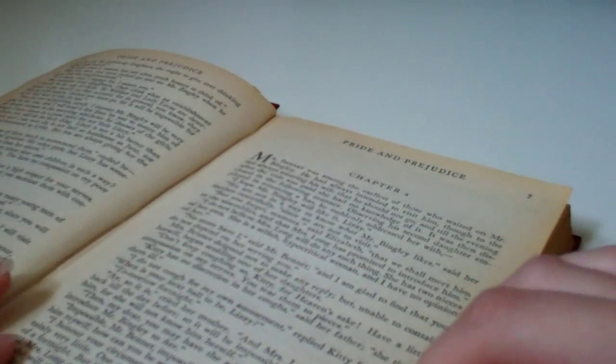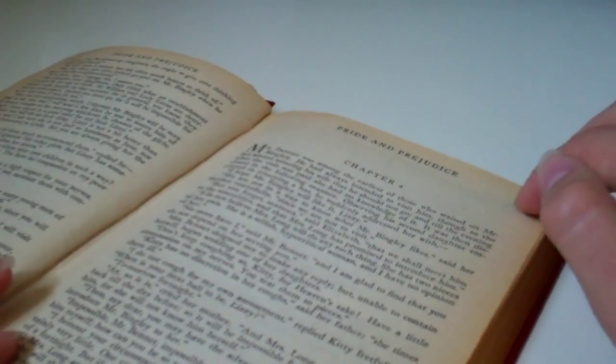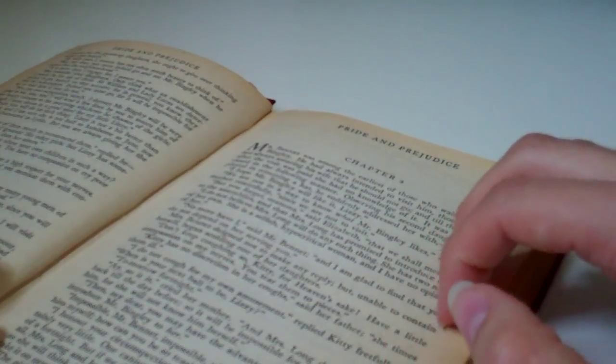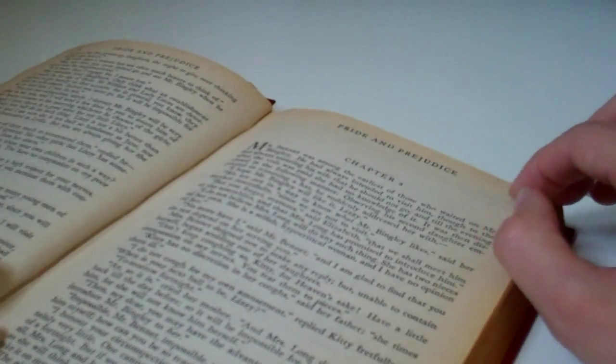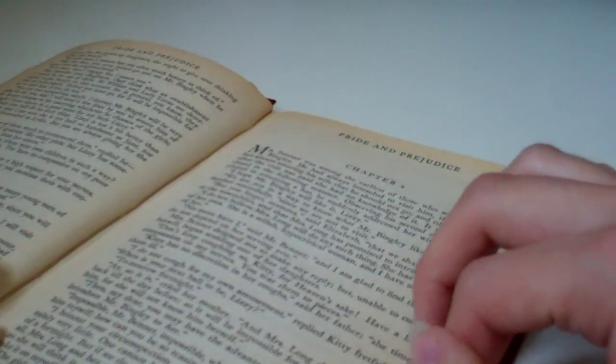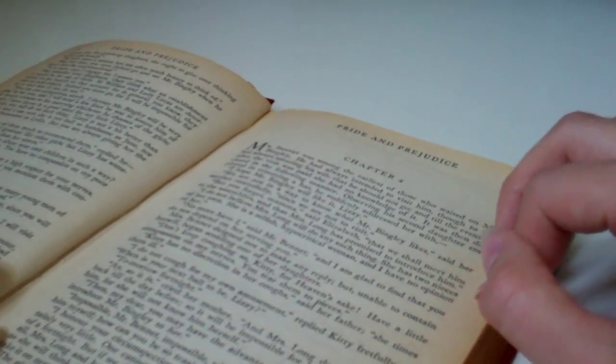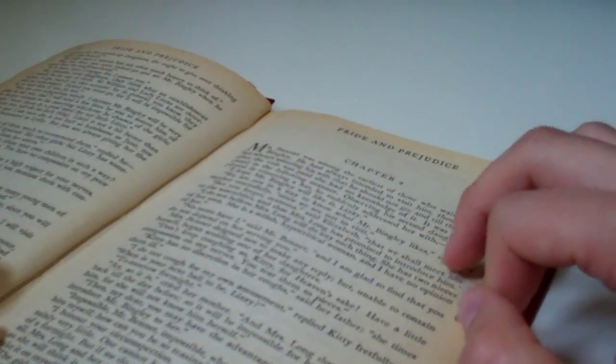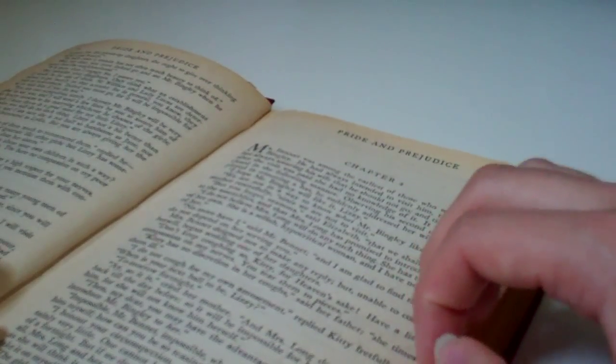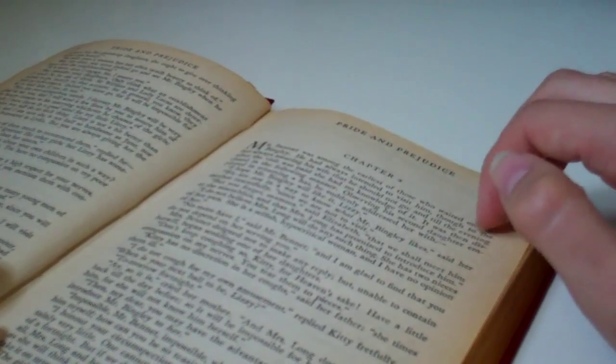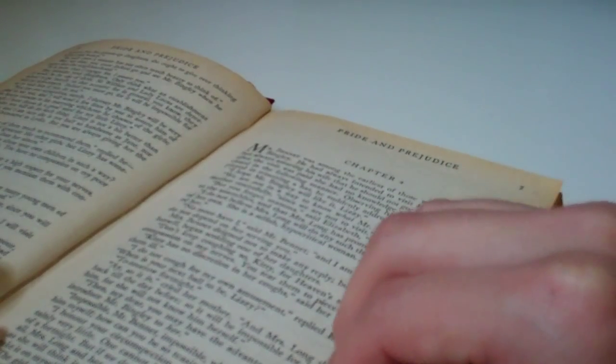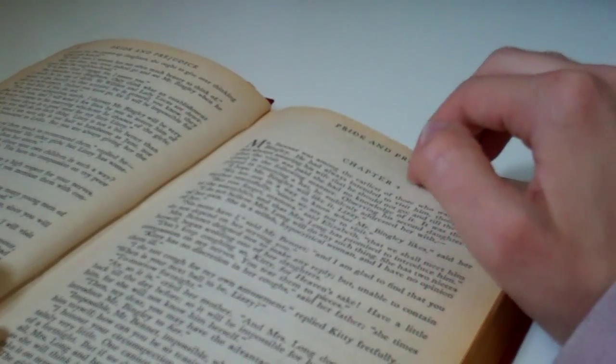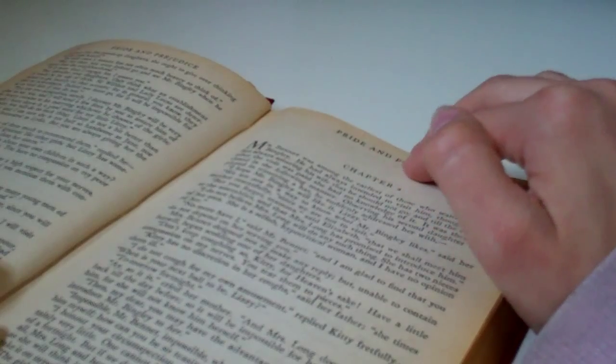Impossible, Mr. Bennet, impossible. When I am not acquainted with him myself, how can you be so teasing? I honor your circumspection. A fortnight's acquaintance is certainly very little. One cannot know what a man really is by the end of a fortnight. But if we do not venture, somebody else will. And after all, Mrs. Long and her nieces must stand their chances. And therefore, as she will think it an act of kindness if you decline the office, I will take it on myself.